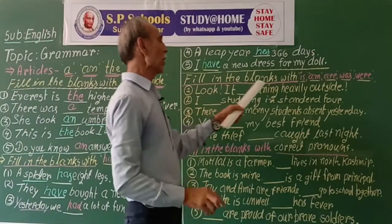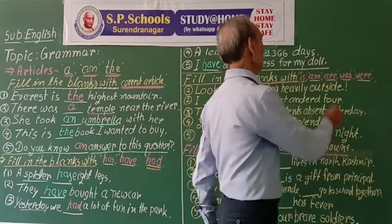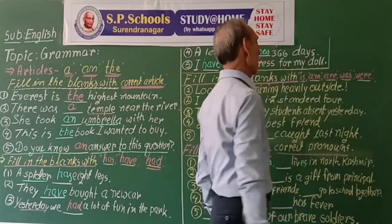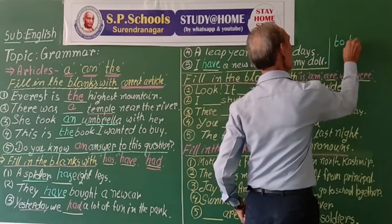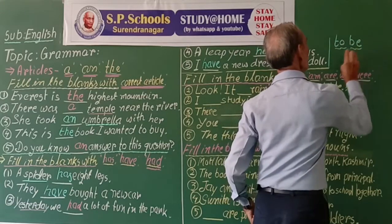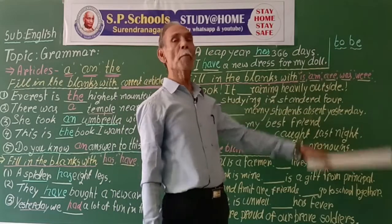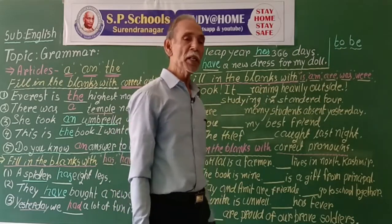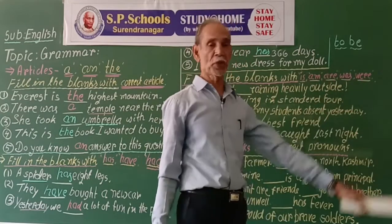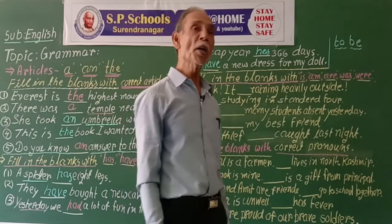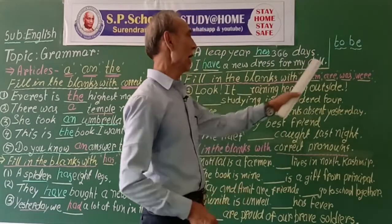Now fill in the blanks with 'is', 'am', 'are', 'was', or 'were'. These are the forms of the verb 'to be'. In English, only this verb 'to be' has the largest number of various forms — no other verb in English has as many forms.